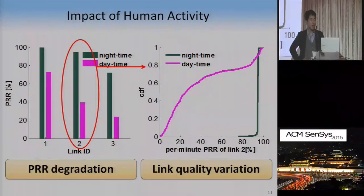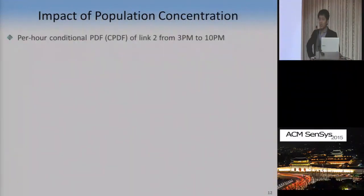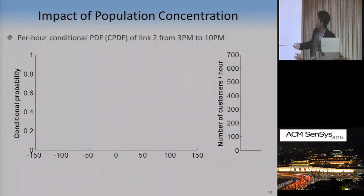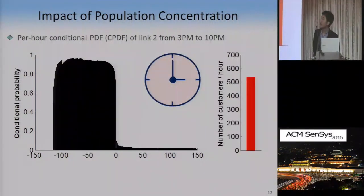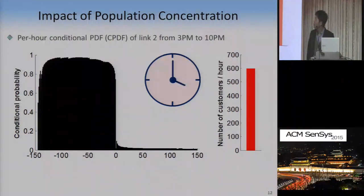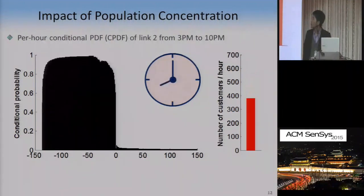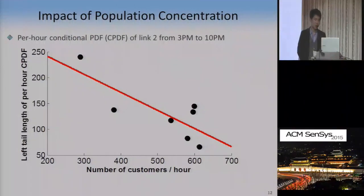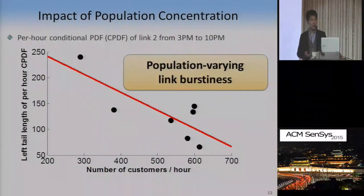Given that human activity impacts link quality and the number of customers may change during daytime, we asked how population concentration impacts link characteristics. To get the answer, we plot the per-hour conditional PDF (cPDF) of link 2 alongside the number of customers per hour. The left tail length of the cPDF increases with link burstiness. As time goes by, the number of customers changes and so does link burstiness. Specifically, we found that the number of customers and link burstiness are negatively correlated. So our market wireless environment has population-varying link burstiness.